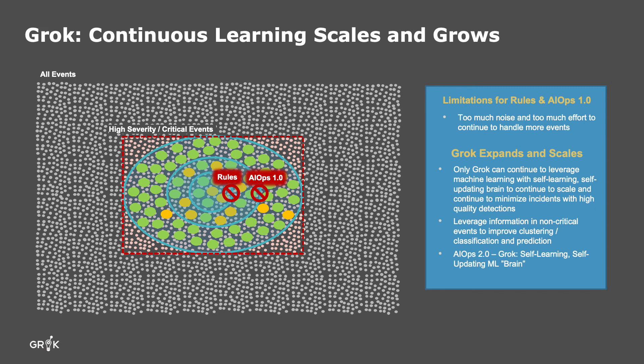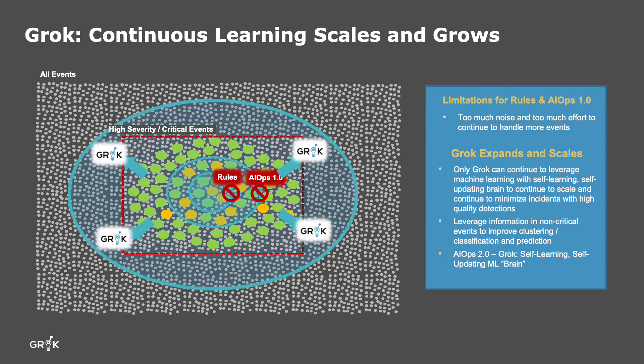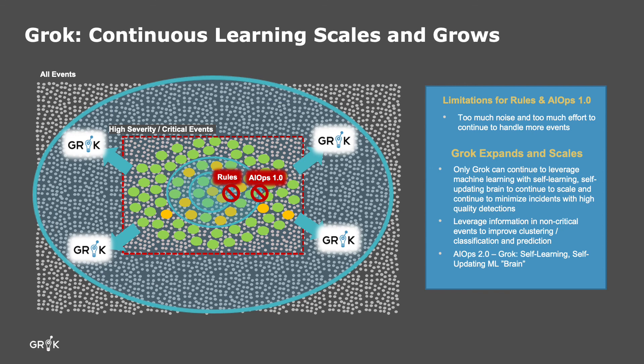They know it will create an unreasonable amount of noise and tickets their teams can't manage, so they end up ignoring low, informational, and medium severity events altogether. Our customers want to be more predictive while still limiting noise. Since I use AI and machine learning, I don't have any limitations with accuracy or coverage, so I can further expand my coverage and allow in a larger number of events without sacrificing accuracy or performance.